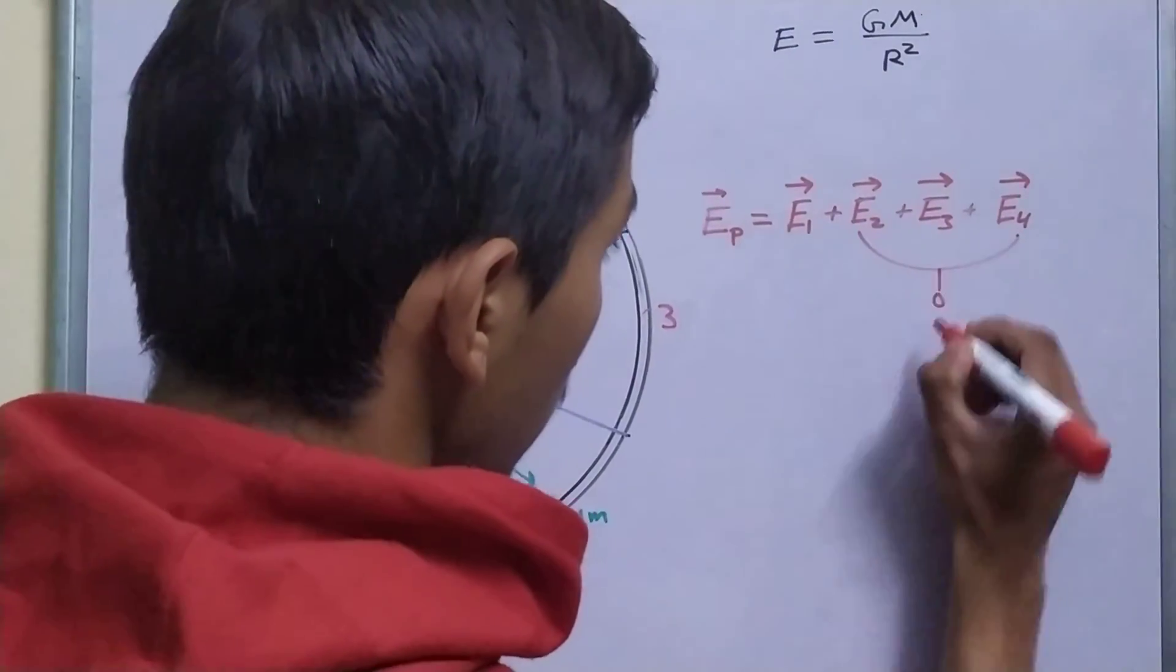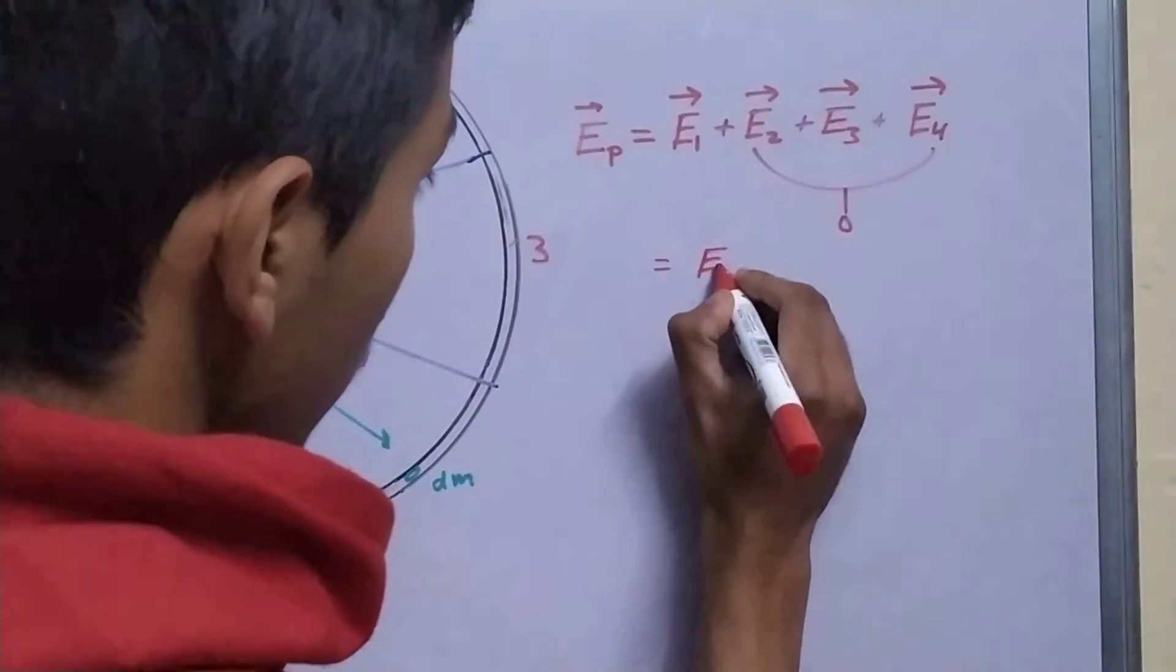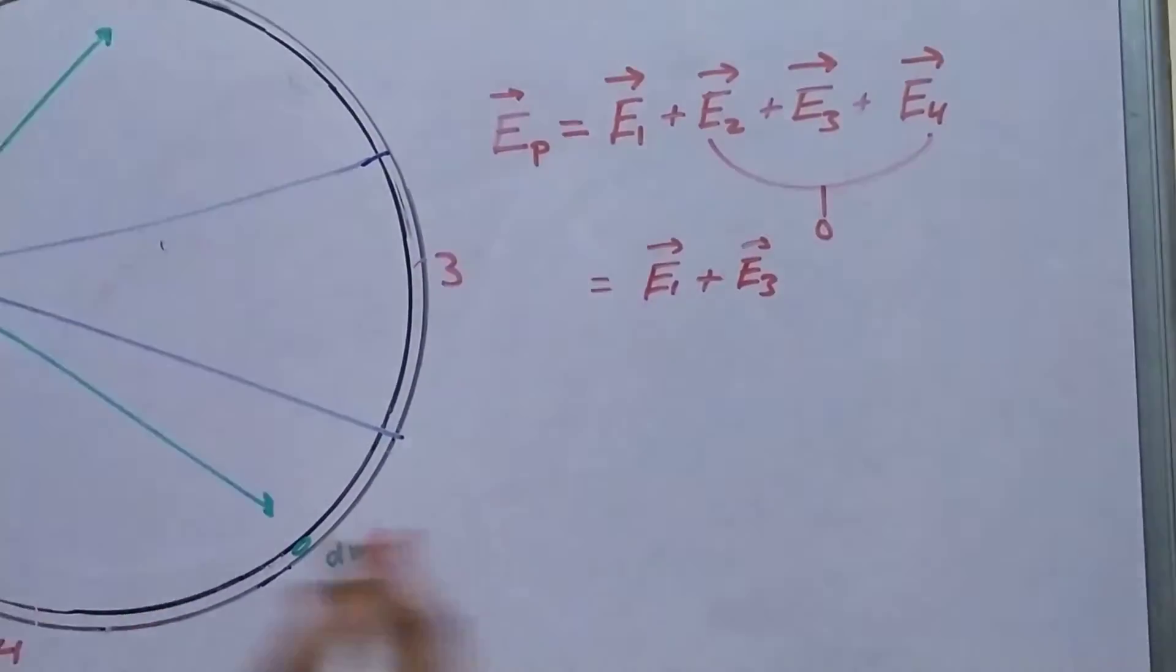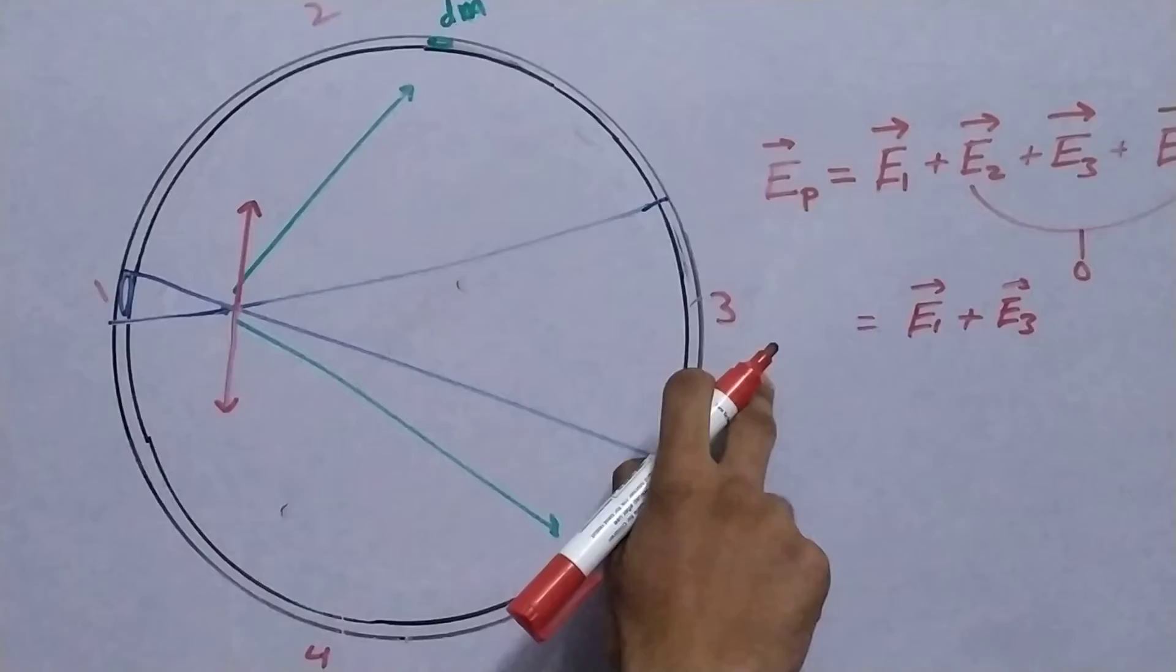The sum of these two is zero. So, basically, we have to find E1 plus E3, so field due to this region, plus the field due to this region.